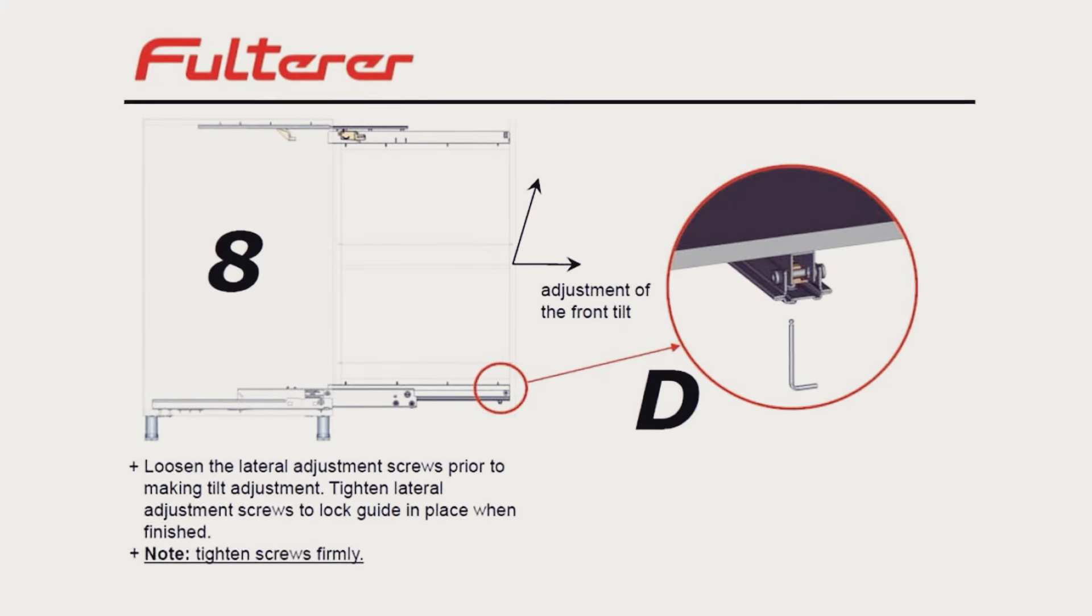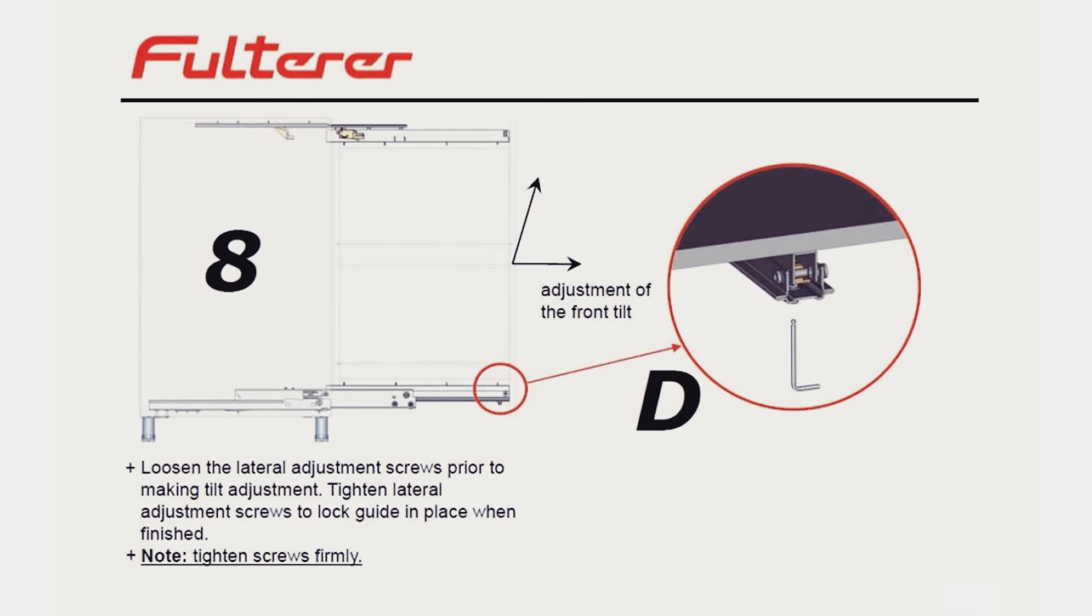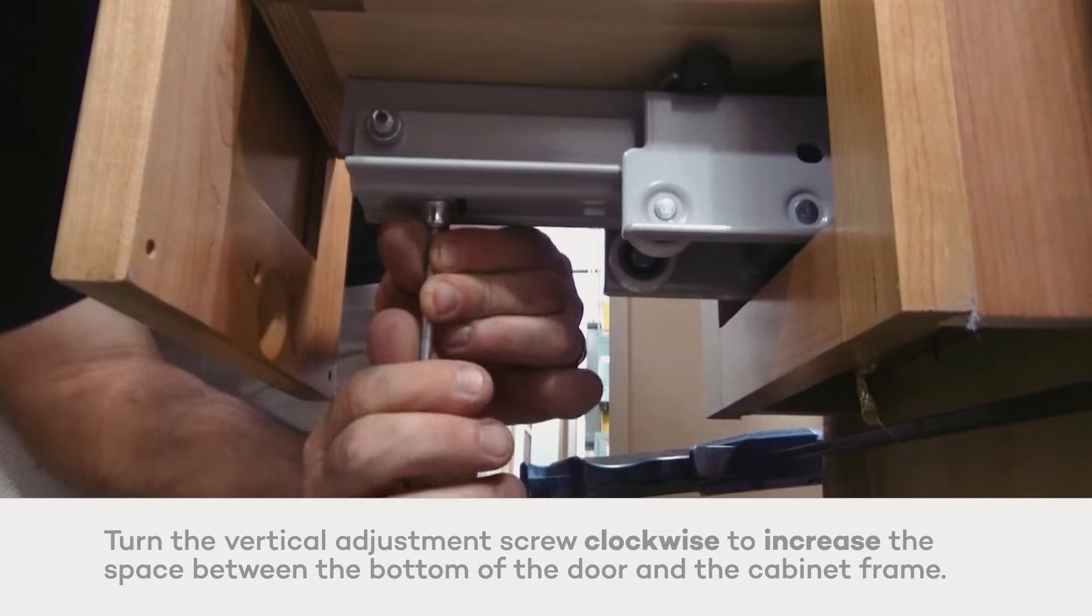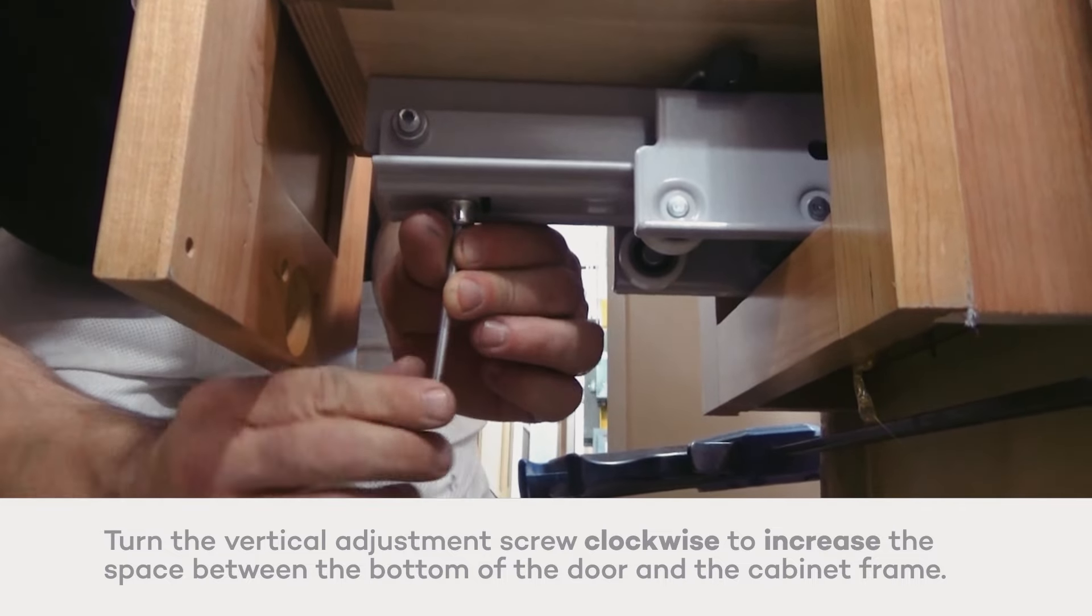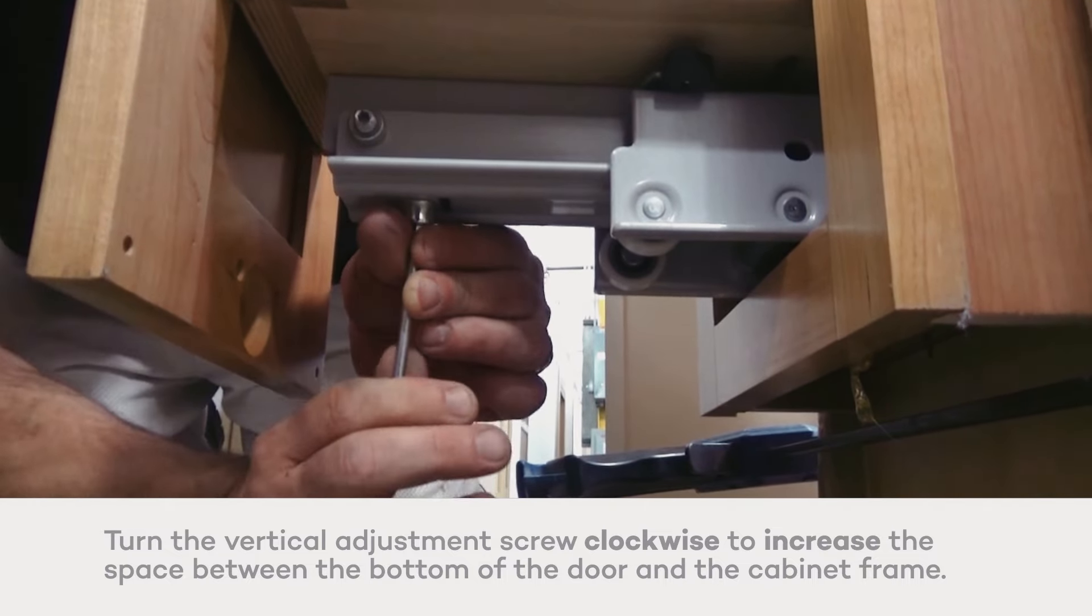To increase the amount of space between the bottom of the door and the frame of the cabinet, turn the vertical adjustment screw clockwise. This will move the door away from the unit, increasing the space.